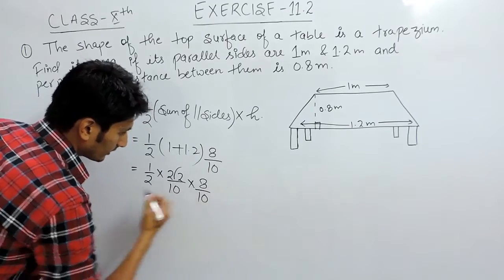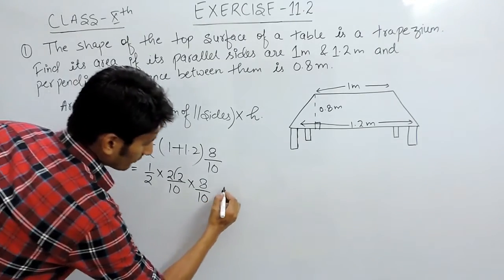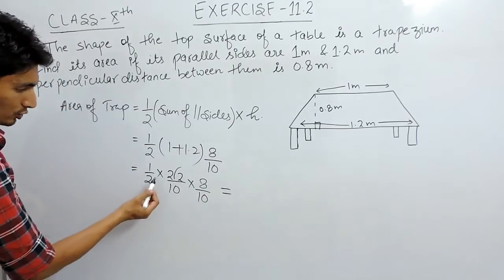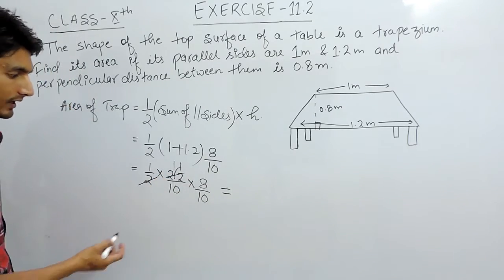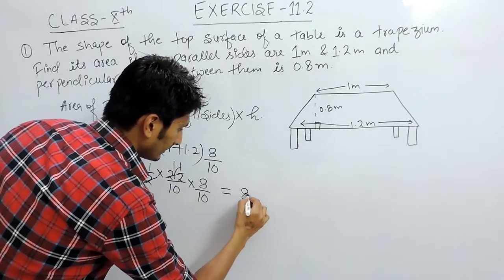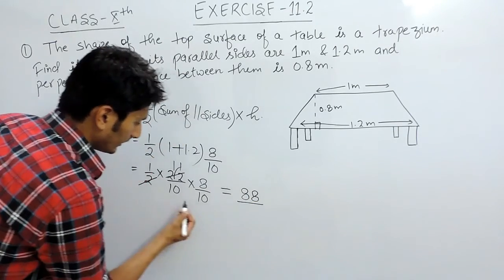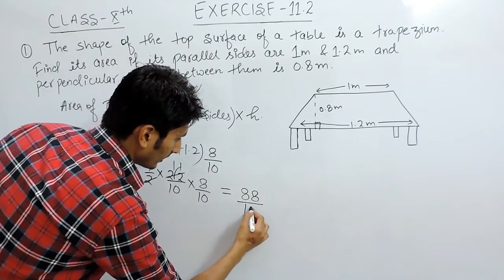This will be 8 upon 10. Further solving this, this 2 can be cancelled, 11 times, and 11 into 8 is 88 upon 10 into 10 is 100.